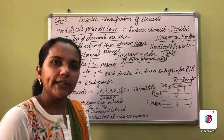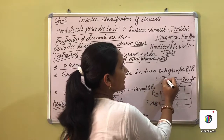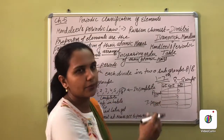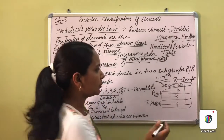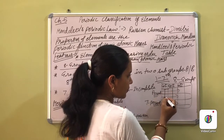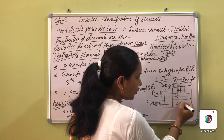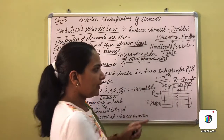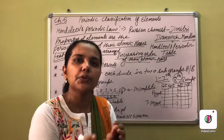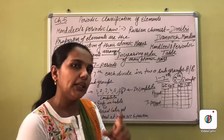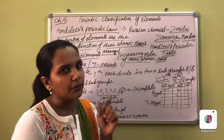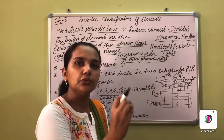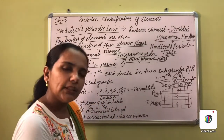From groups 1 to 7, all groups were divided into two subgroups each - group 1 into two, group 2 into two, group 3 into two, and so on. However, the eighth group, the last one, was divided into three subgroups. This was a characteristic feature of Mendeleev's Periodic Table.